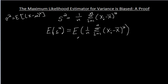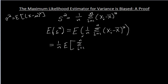Now I'm going to pull the 1 over n out, and then I'm going to distribute out what's inside. I'm going to need a little more space, so that is 1 over n times the expectation of the sum from i equals 1 to n of xᵢ squared minus 2xᵢx̄ plus x̄ squared.